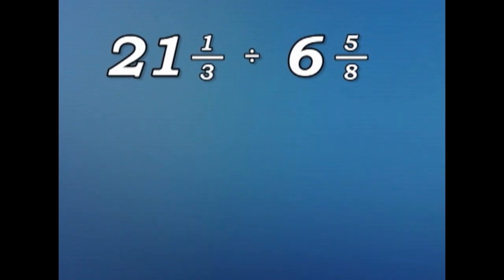21 and one third becomes 64 over three. Six and five eighths becomes 53 over eight. Using the rule we learnt last time, when we're dividing, we multiply by the reciprocal.